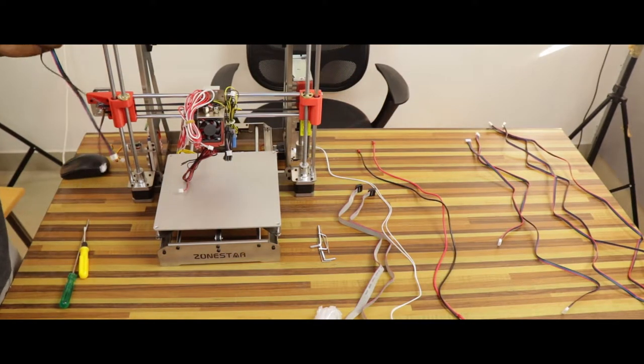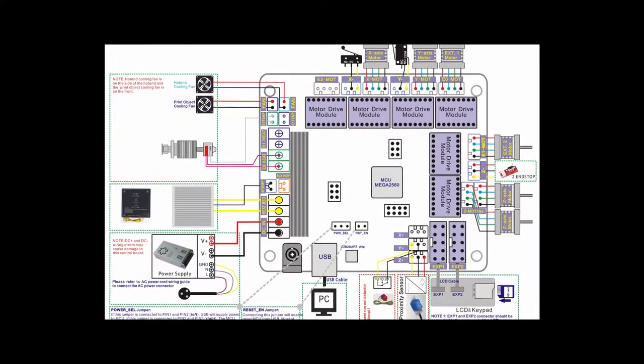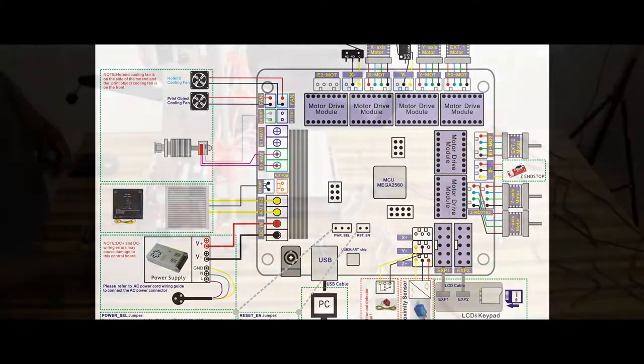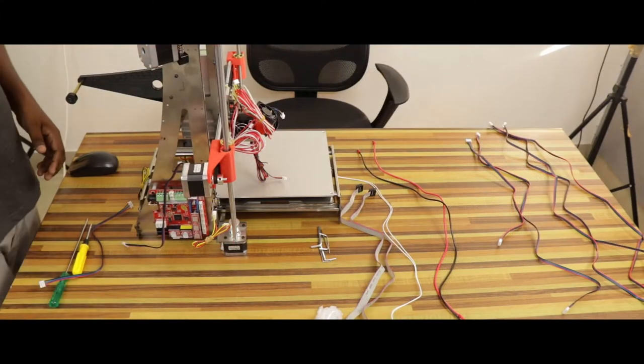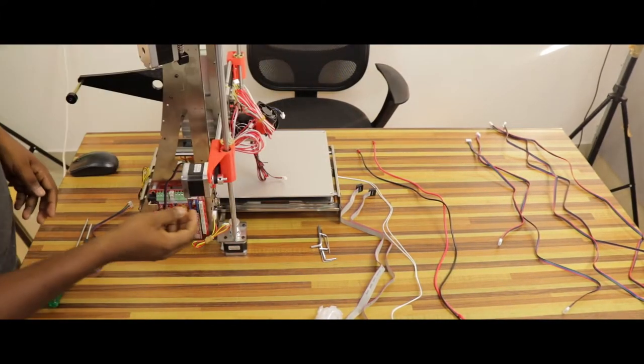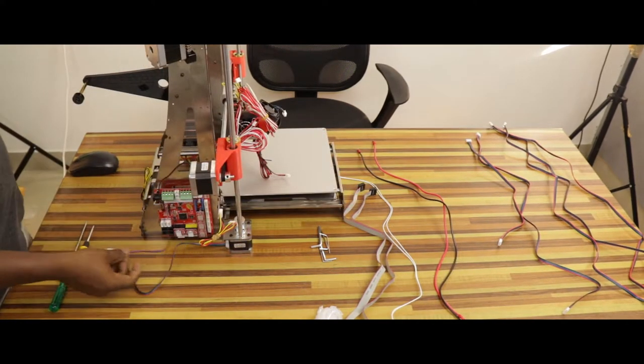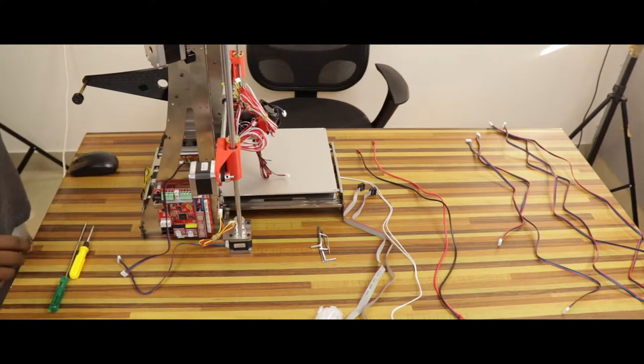Now it's time to do all the wiring. Zone star has included this nice wiring diagram in the memory card. Let's attach the stepper motor cables to the controller board. The cables are of different length because the motors are located at different positions. The wiring diagram includes the sockets where you have to attach the stepper motor driver, the motor cables and the end stop modules.